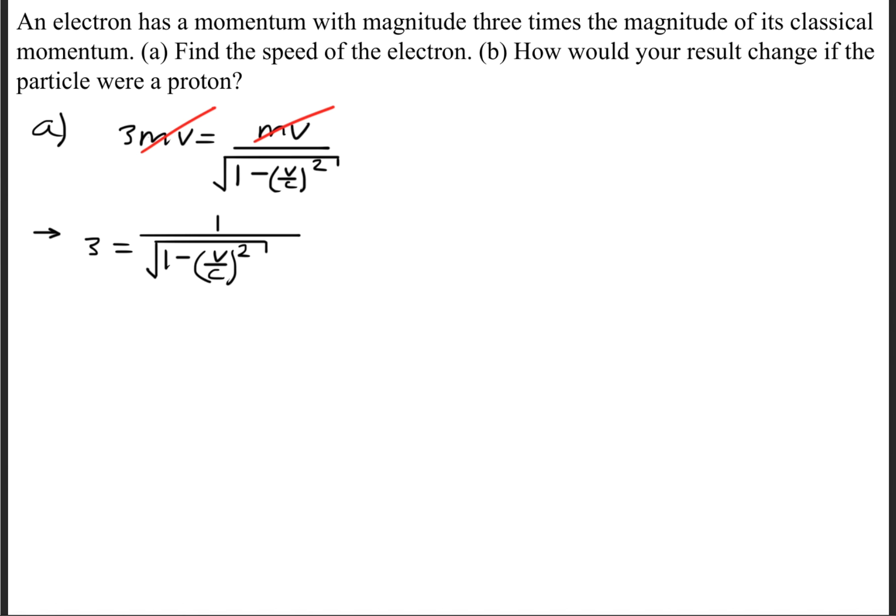The next thing we're going to do is cancel the MVs on both sides so that we get 3 is equal to 1 divided by the square root of 1 minus v over c squared.